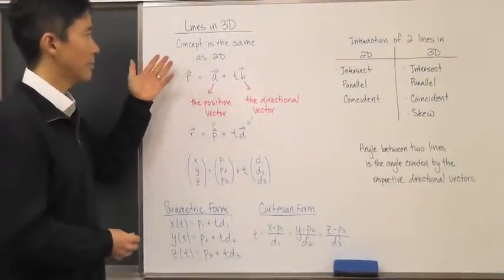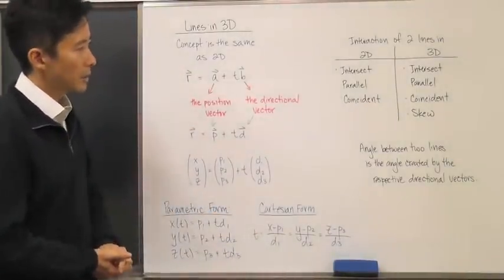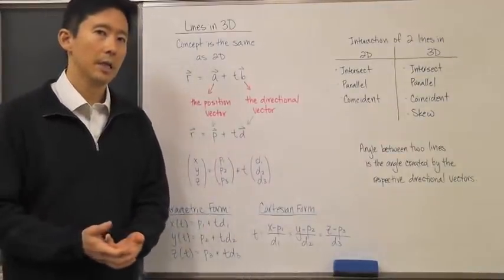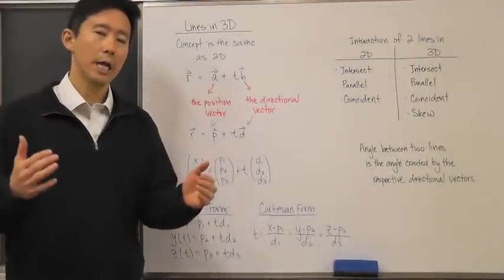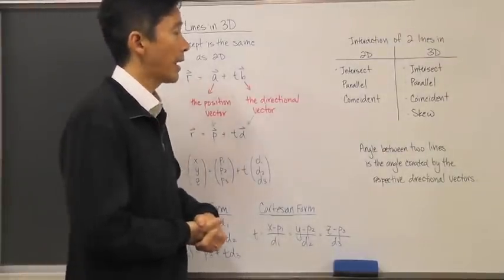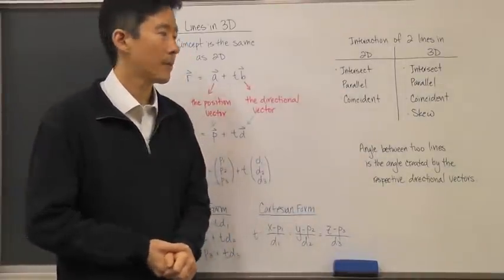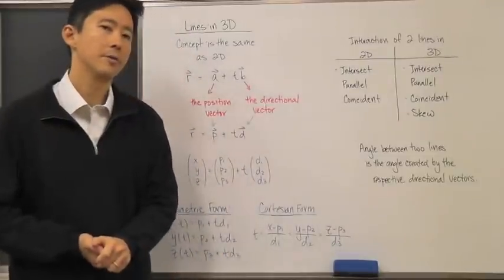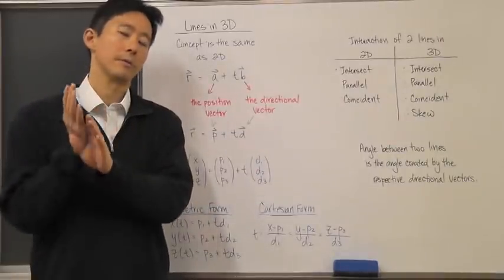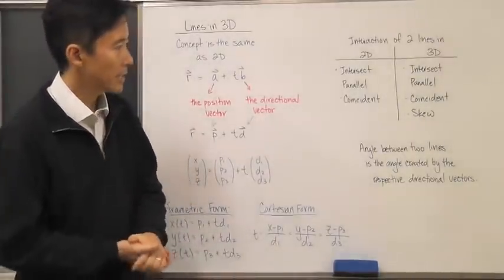So we now have lines in three dimensions in the vector form, the parametric form, and the Cartesian form. We also need to determine how lines interact with each other, including what angle they intersect at. In two-dimensional space, two lines can either intersect, be parallel, or be coincident — lying right on top of each other. The three-dimensional case includes those same three possibilities.